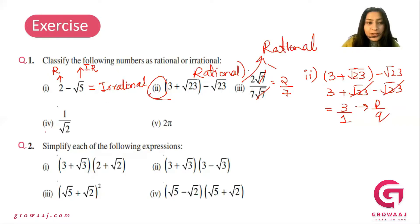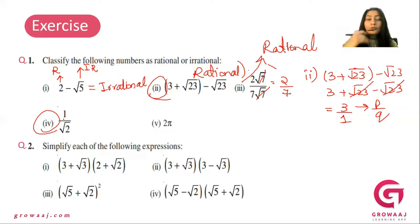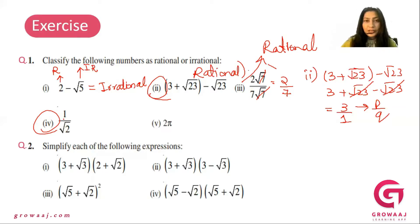Next, question number 4: 1 by square root of 2. If you have square root of 2 in the denominator, what type of number is it? Since it cannot be written in P by Q form with integers, it is an irrational number.